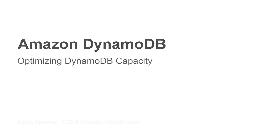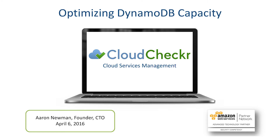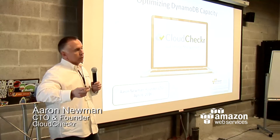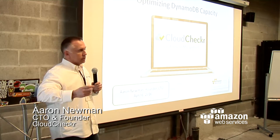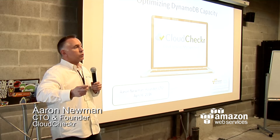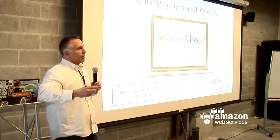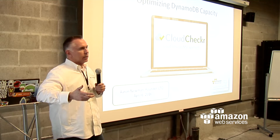I'm the CTO and founder, and we're going to talk about DynamoDB capacity. Three different things: right-sizing — how much should you provision and how much are you consuming — the second is reserved usage, how much reserved usage should you use, and then how do I actually allocate and understand my spend.